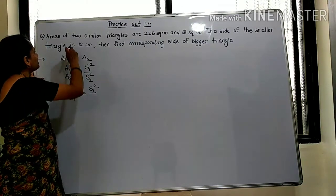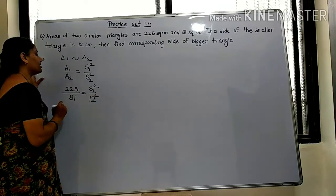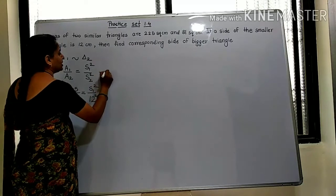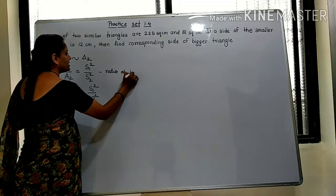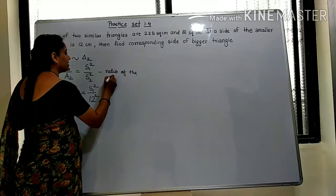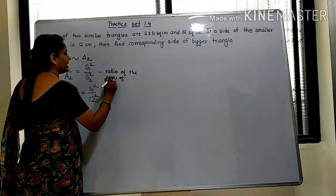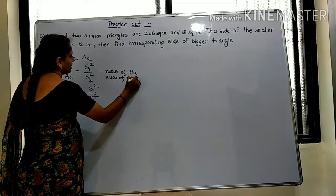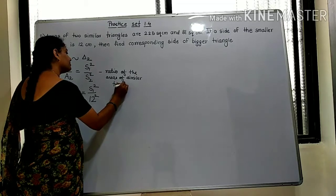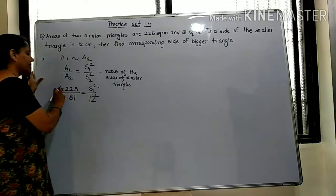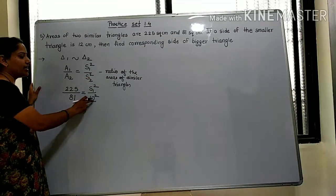And the side of the smaller triangle is given as 12 centimeters. So we write 12 squared here. Now we need to take the square roots of both sides.